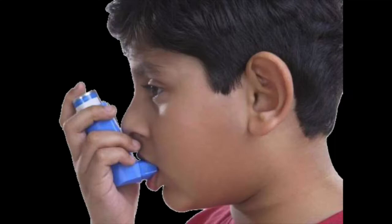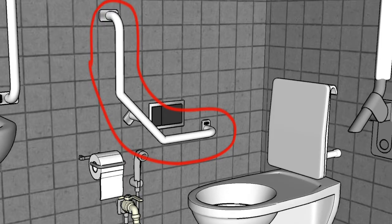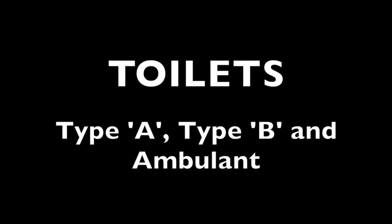Even some temporary conditions make accessible toilets important. Those include conditions causing temporary weakness such as pregnancy, asthma, dialysis, or due to leg casts. In all these cases, the grab rails provided in an accessible toilet are helpful.